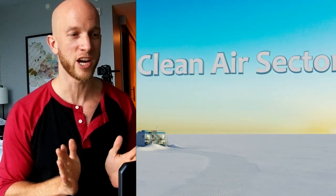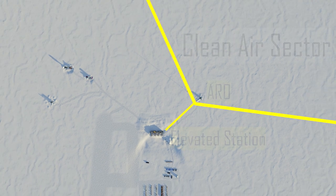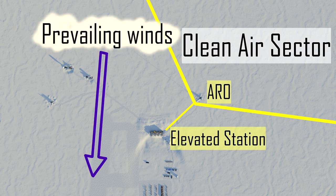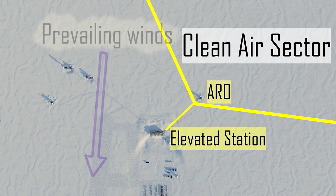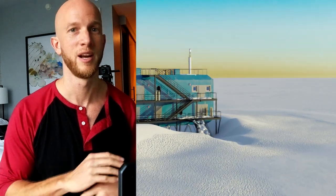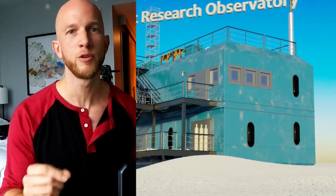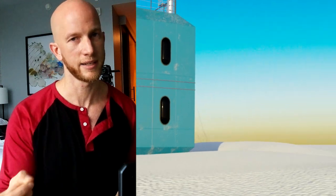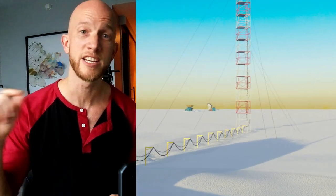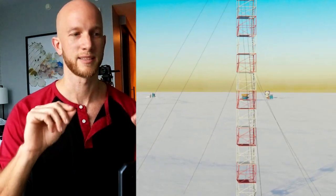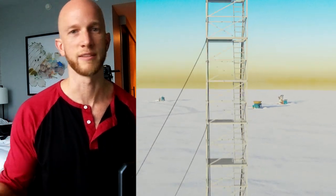After some more fancy flying, we come to the Clean Air Sector. The Clean Air Sector is basically a giant wedge of land that goes out from one of the corners of the station and continues on for like a hundred miles. It's upwind from the station, so you're not getting any of the exhaust or fumes from the power plant or vehicles. So any air sampled in the Clean Air Sector is pretty much clean, with no real sources of pollution within hundreds or thousands of miles.